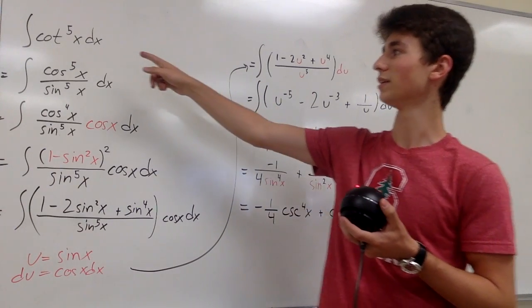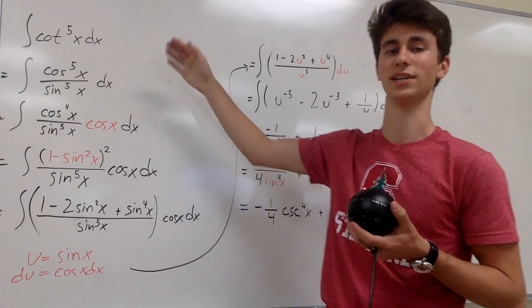Hi, so we're going to be integrating cotangent to the fifth of x, but with the sine cosine method.